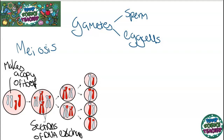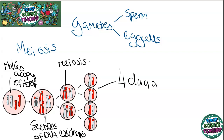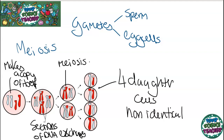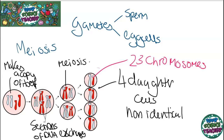During the meiosis stage, when the nucleus actually divides, you can see that DNA has been exchanged. You get four daughter cells that are non-identical, due to the DNA exchanging. Each one of these daughter cells only has 23 chromosomes, not like a normal adult cell which has 46.